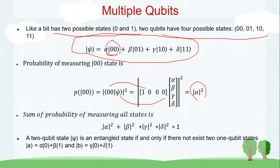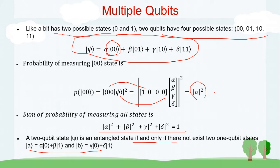A two-qubit state is entangled if and only if it cannot be written as a product of two individual one-qubit states. So if you are given a two-qubit state and you are able to separate it into two individual qubit states, then they are not entangled. Most quantum algorithms make use of entangled states, and you will also need to understand what happens with multiple qubits as you progress.